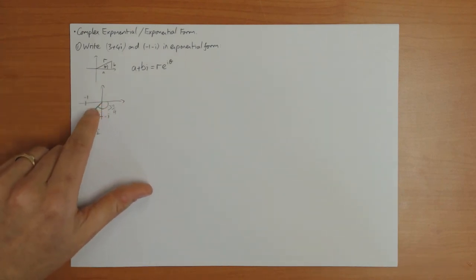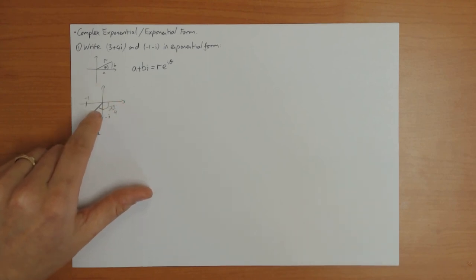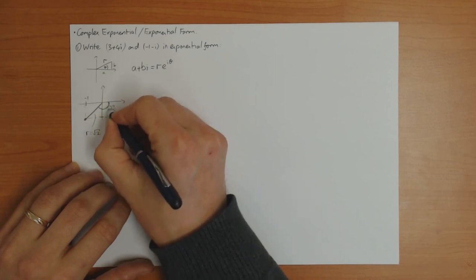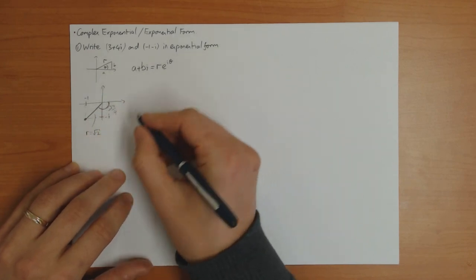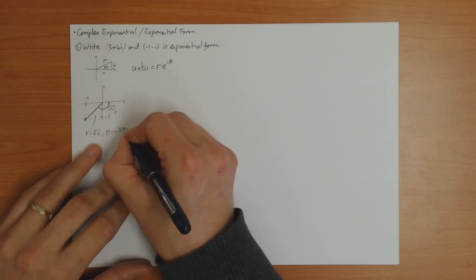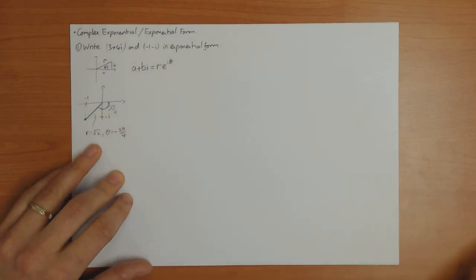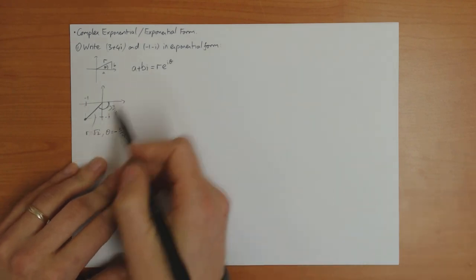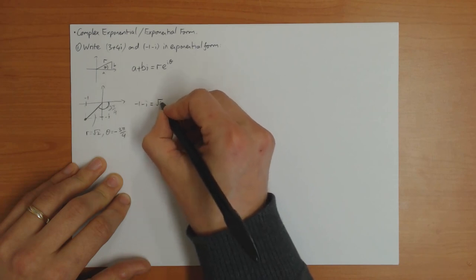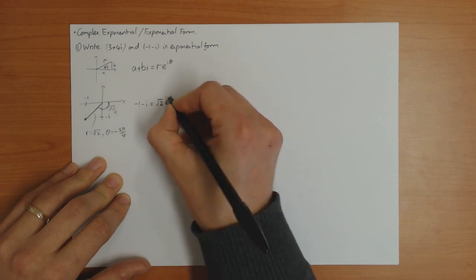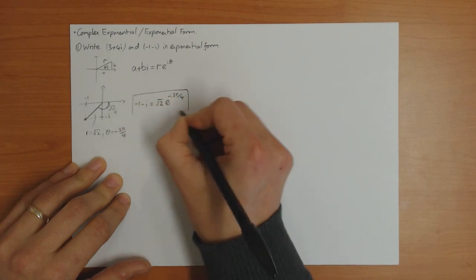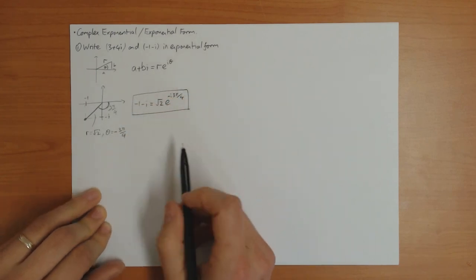This is pi by 2. So the whole angle here is 3 pi by 4, with a minus. If you're going this way around to measure the angle, going negative down here, then the angle itself is counted with a minus sign. So here r is the square root of 2 and theta is minus 3 pi by 4. Putting these into the formula, we get that minus 1 minus i is equal to square root of 2 times e to the minus i 3 pi by 4.